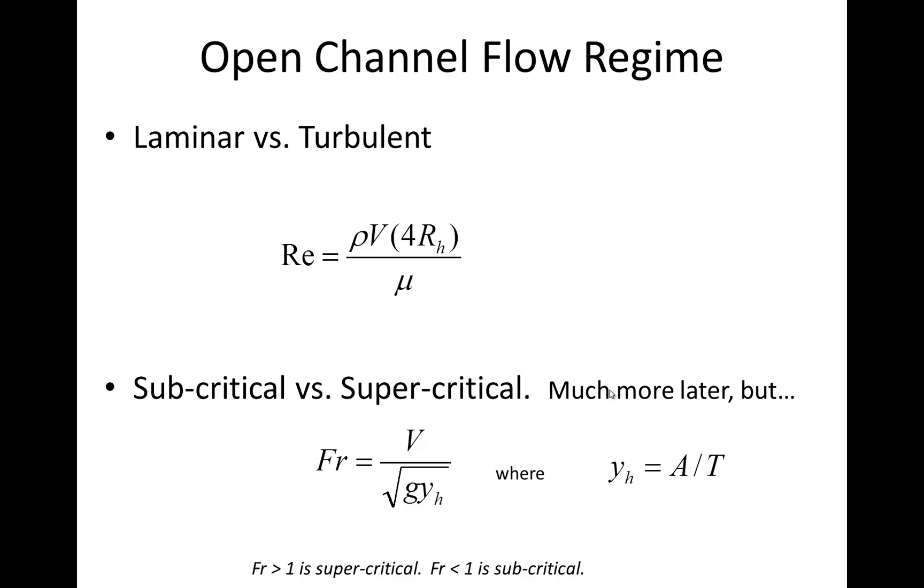So T is the top width of a channel, A the cross-sectional area, and so if it's a non-rectangular channel you can find this hydraulic depth Y sub H. But that allows you to get the Froude number, and any Froude number greater than one is supercritical, less than one is subcritical, and it's going to be pretty exciting to visualize those two different types of flow when we get to hydraulic jump day. But for now, just know that those are two different ways to classify open channel flow, and I think that you need to refer to both in the homework assignment.